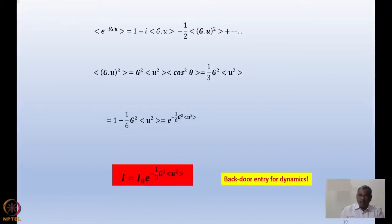But because of vibration of the atoms around the mean position, their size increases, this u square. The apparent size increases to the x-rays or neutrons even. And then the intensity falls with a factor e to the power minus 1/3 g square u square. This is a backdoor entry for dynamics.